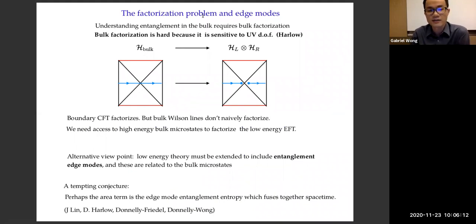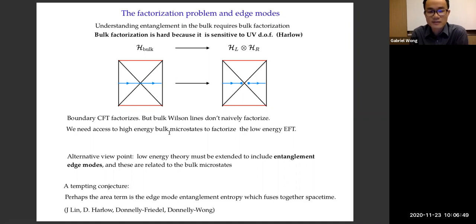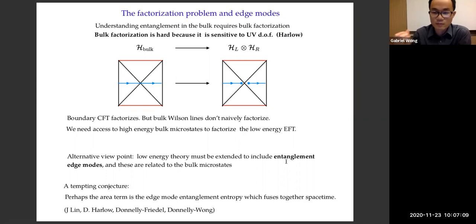Before reviewing Susskind and Ogburn's proposal, I want to discuss the factorization problem and edge modes. Understanding entanglement in the bulk is difficult because we have to first factorize the Hilbert space, and that problem is hard because factorization is sensitive to UV degrees of freedom. Dan Harlow observed that if we take the ADS Schwarzschild geometry, it's obvious that the boundary factorizes — we have two CFTs and a tensor product. However, a Wilson line in a low-energy gauge theory in the bulk does not factorize unless you have access to bulk microstates, which we can treat as charges at the endpoints of the Wilson lines. Another way to say this is that the low-energy theory has to be extended to include entanglement edge modes, and these edge modes are related to the bulk microstates. It's been conjectured that the area term in the generalized entropy is actually the entanglement entropy of these edge modes fusing together the spacetime across the horizon.